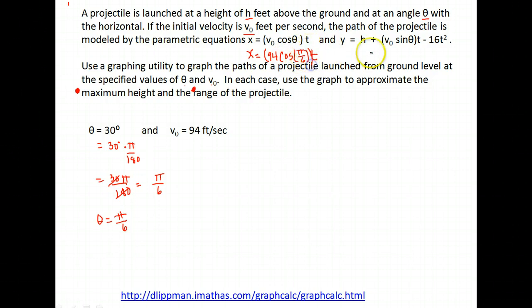And I need one more parenthesis there. Okay, y equals h the initial height, it says it's launched from ground level so this is zero, so I'm not going to worry about this part of the equation because it's launched from ground.